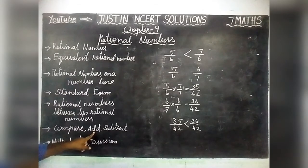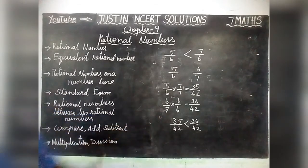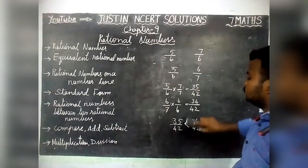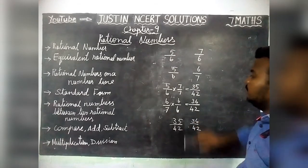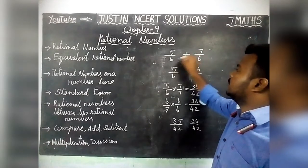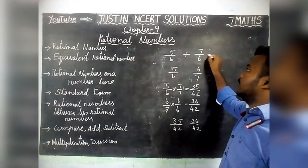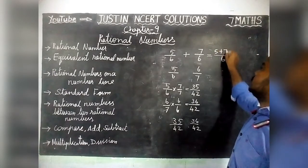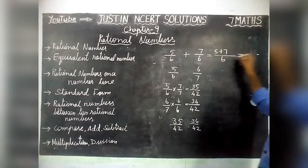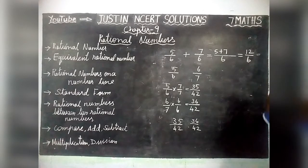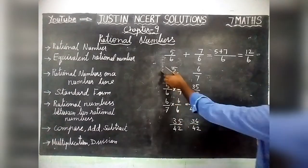For addition, the same concept applies. If denominators are common — for example 5 by 6 plus 7 by 6 — we add directly. Common denominator 6, and 5 plus 7 equals 12. So the answer is 12 by 6.